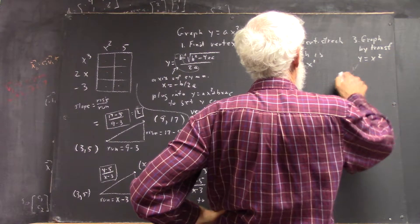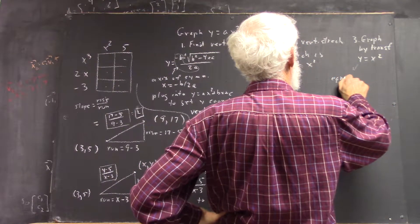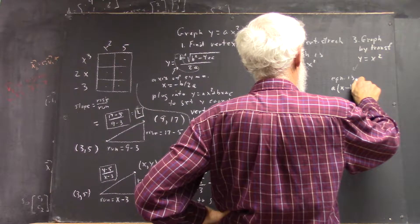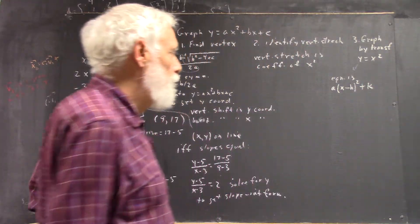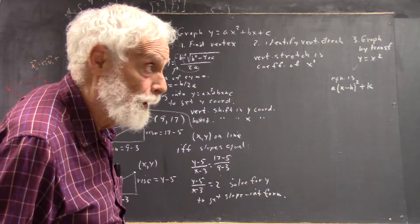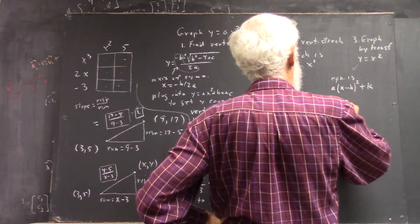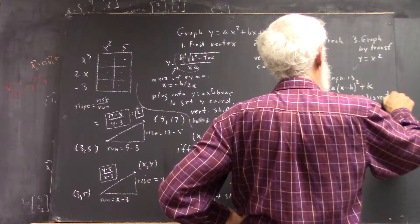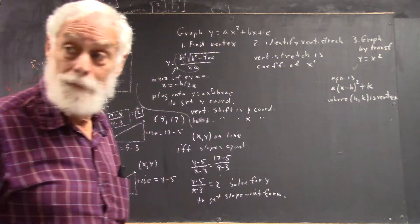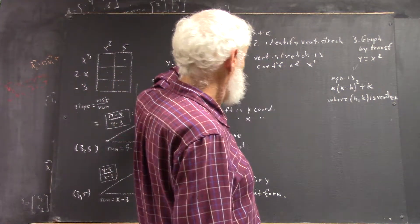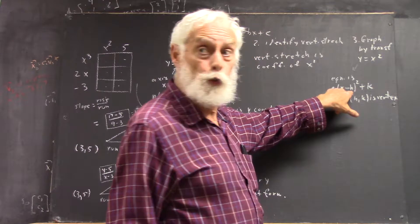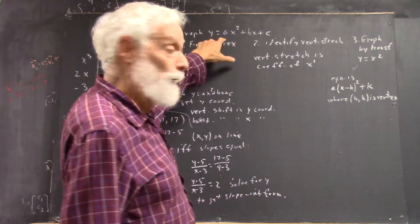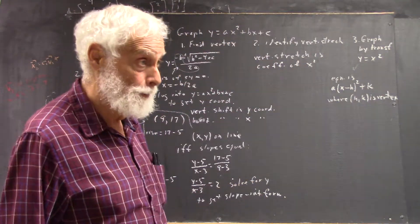So when you're graphing, you can see that the equation is a times x minus h squared plus k, where the point h, k is the vertex, right? A is the same as it is here, and if you expand that square using the distributive law, you're going to get an ax squared, so it's going to match up with this. I said that last time, and it's worth saying twice.